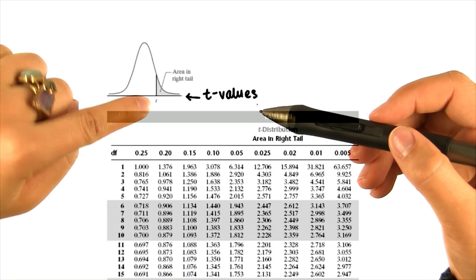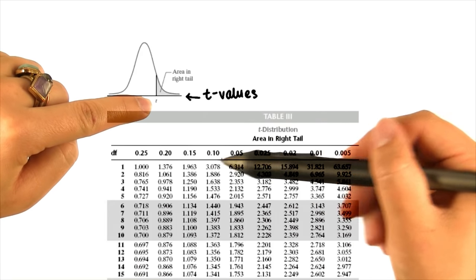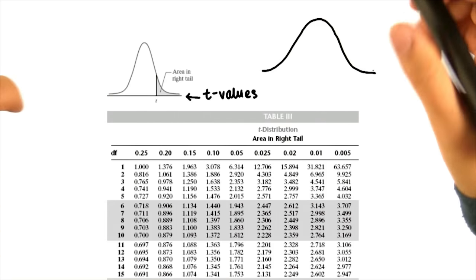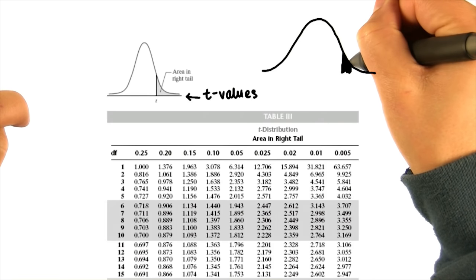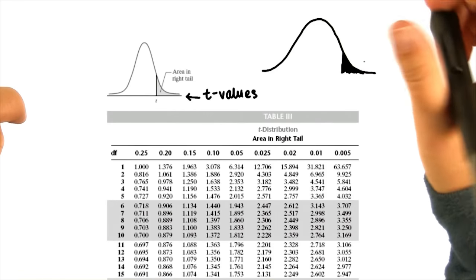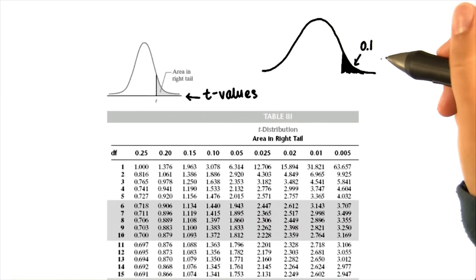In this case, we only really care about the t critical values. So let's say we have a t distribution, and we want to know the t critical value such that 10% is in the tail here, or a proportion of 0.1.